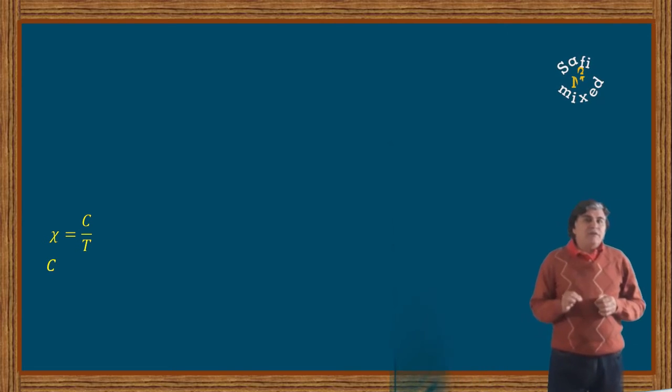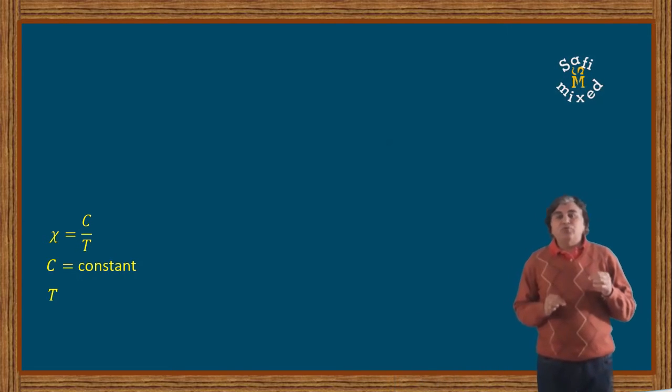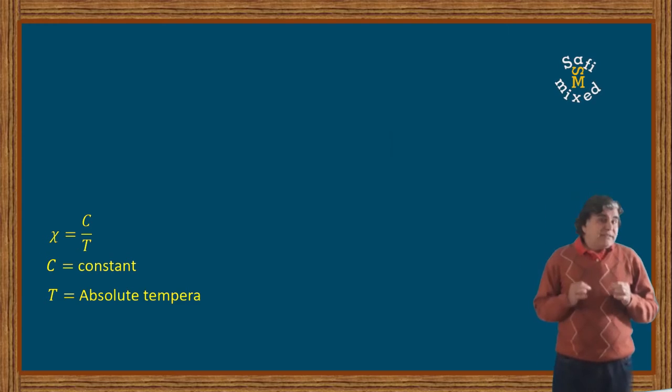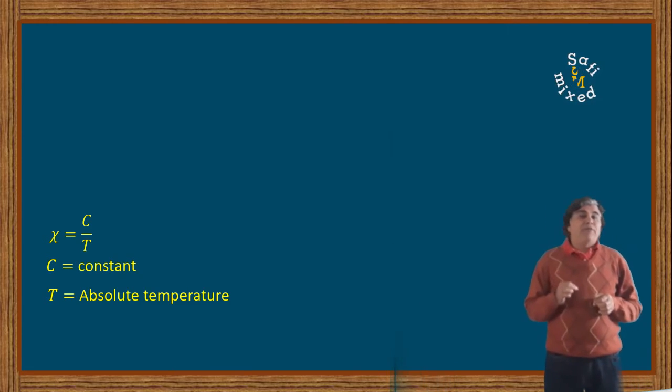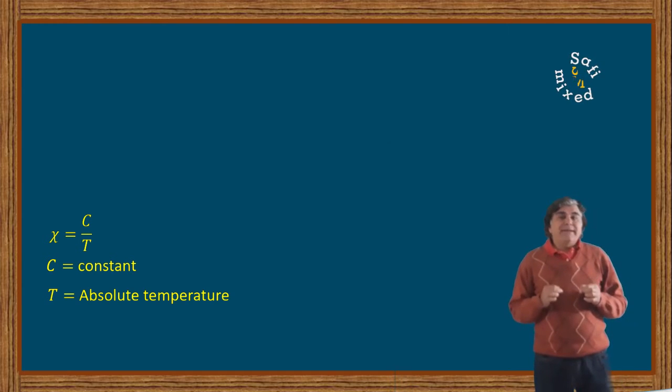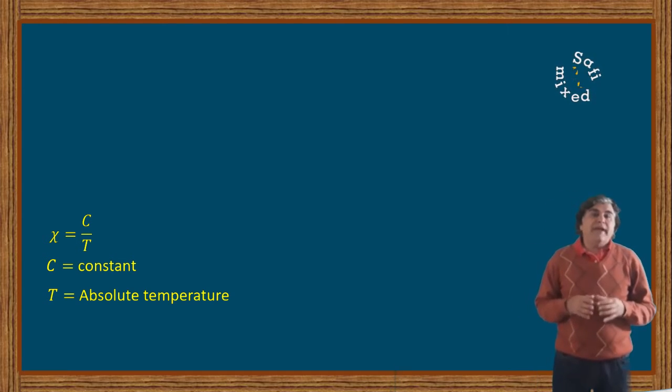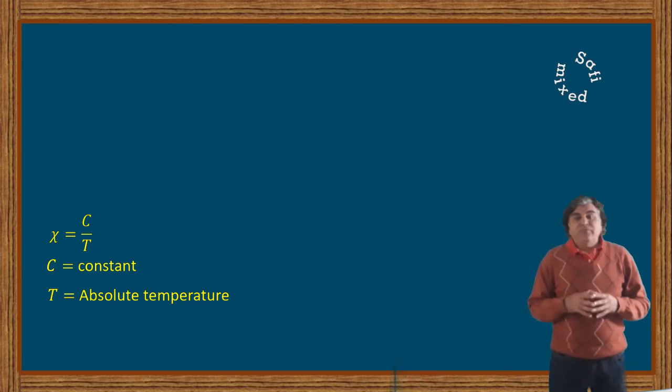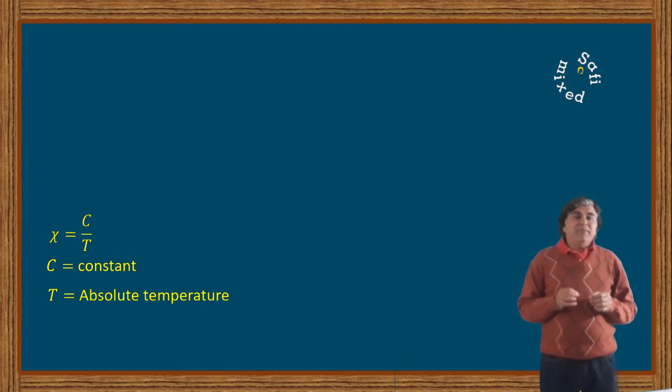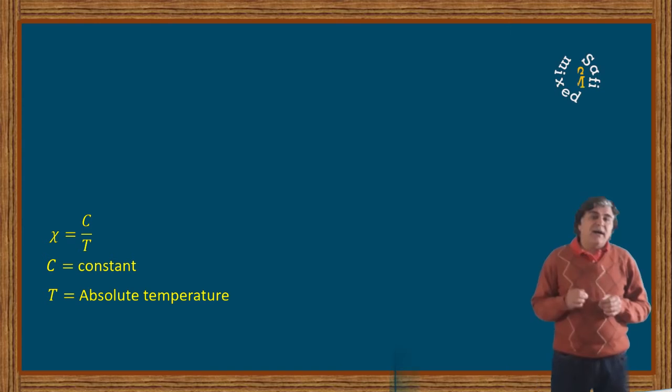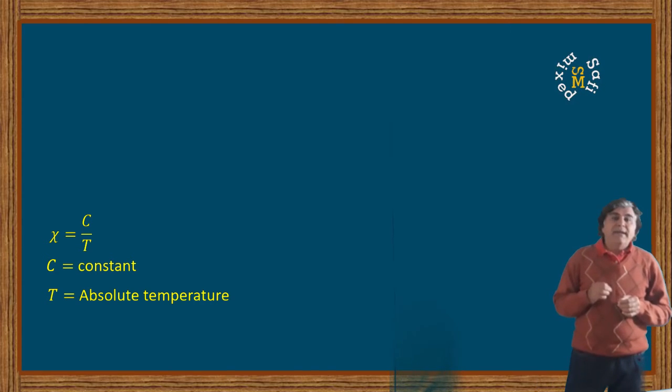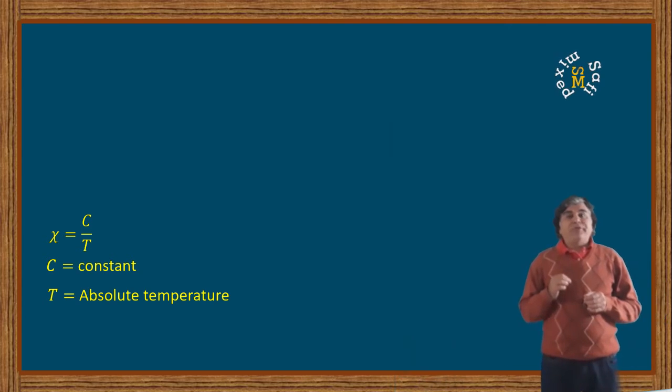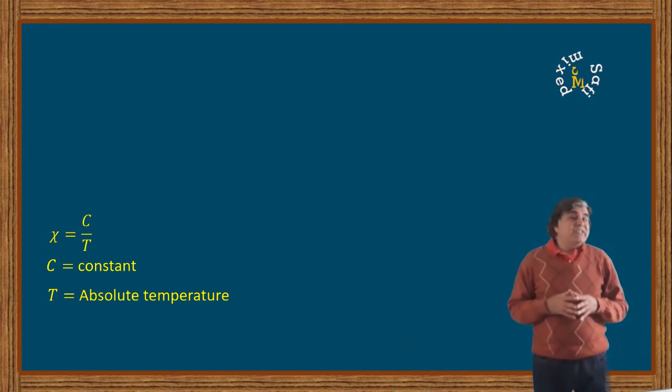This thermometer is constructed with the help of a circuit in the form of mutual inductance bridge known as Hartshorn Bridge, where the paramagnetic thermometric material is placed inside one of the coils which modifies the inductance of the coil and is then calibrated for measuring temperature.